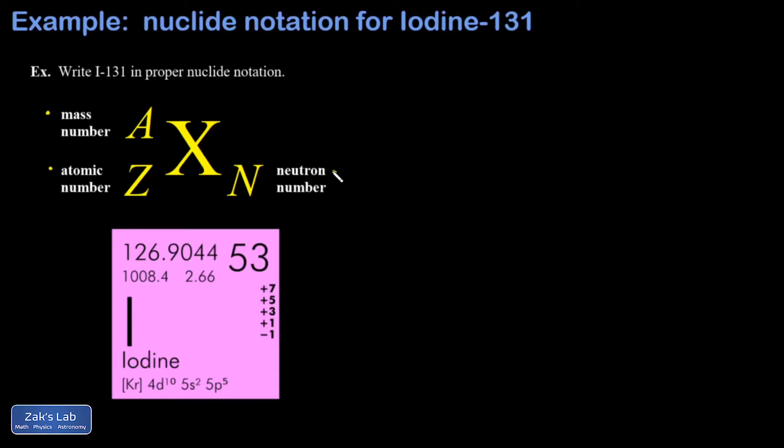In the lower right corner we have the neutron number. I clipped out the square for iodine on the periodic table, and on this periodic table the atomic number is written in the upper right hand corner and that's 53.